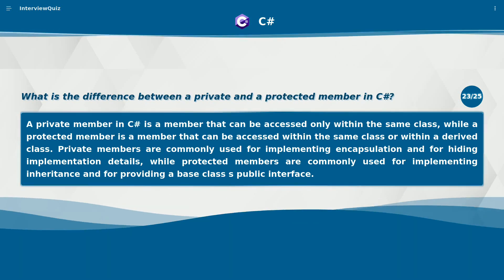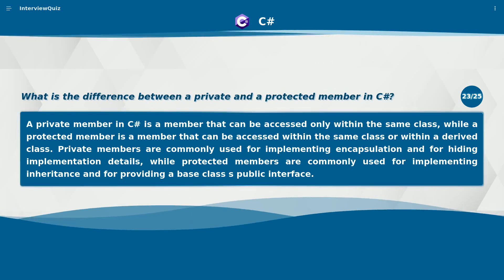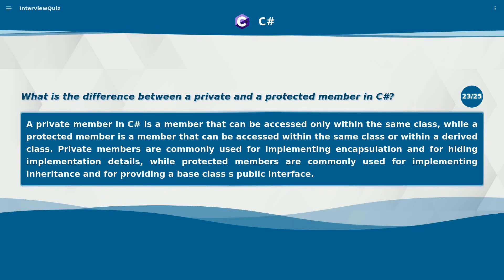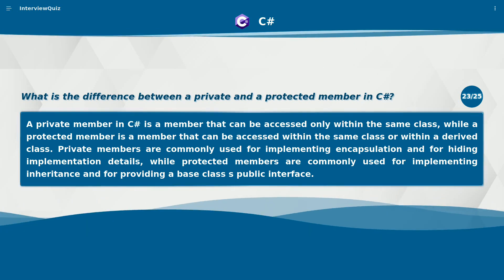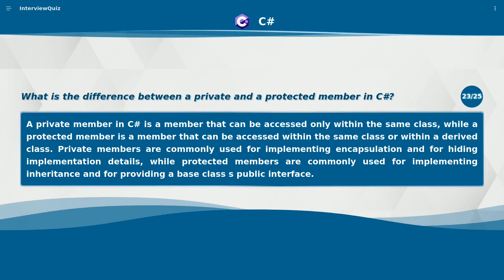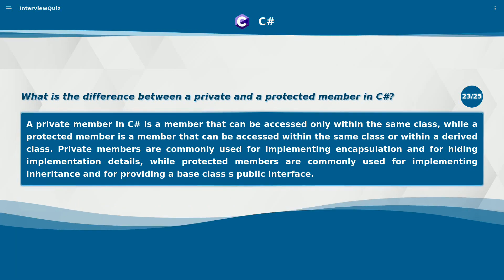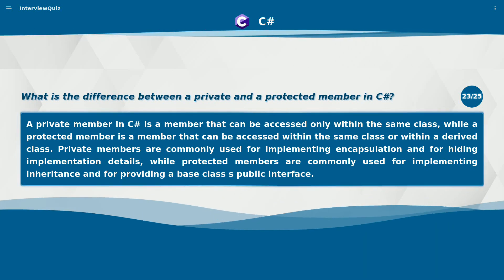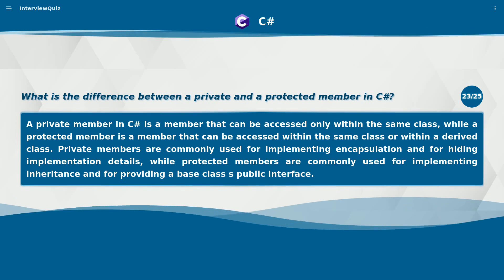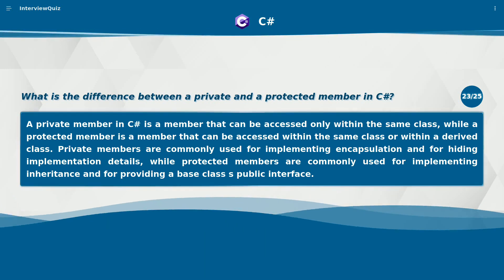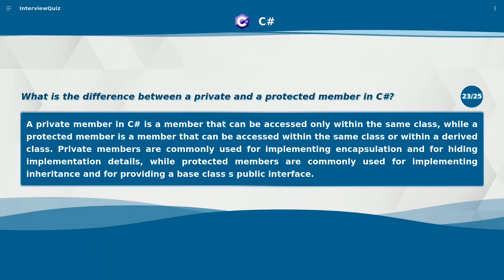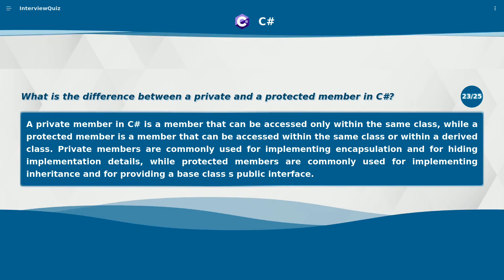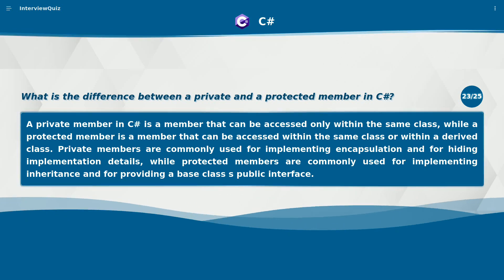What is the difference between a private and a protected member in C#? A private member in C# is a member that can be accessed only within the same class, while a protected member is a member that can be accessed within the same class or within a derived class. Private members are commonly used for implementing encapsulation and for hiding implementation details, while protected members are commonly used for implementing inheritance and for providing a base class's public interface.